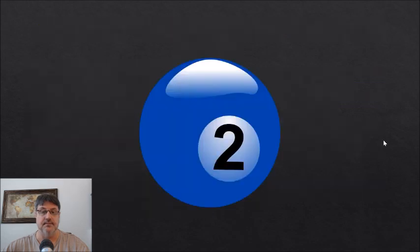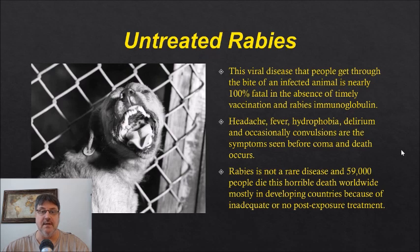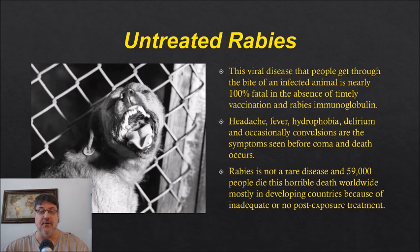Number two: untreated rabies. This viral disease, which people get through the bite of an infected animal, is nearly 100% fatal in the absence of timely vaccination and rabies immunoglobulin. Headache, fever, hydrophobia, delirium, and occasionally convulsions are the symptoms seen before coma and death occur. Rabies is not a rare disease — 59,000 people die this horrible death worldwide, mostly in developing countries because of inadequate or no post-exposure treatment.